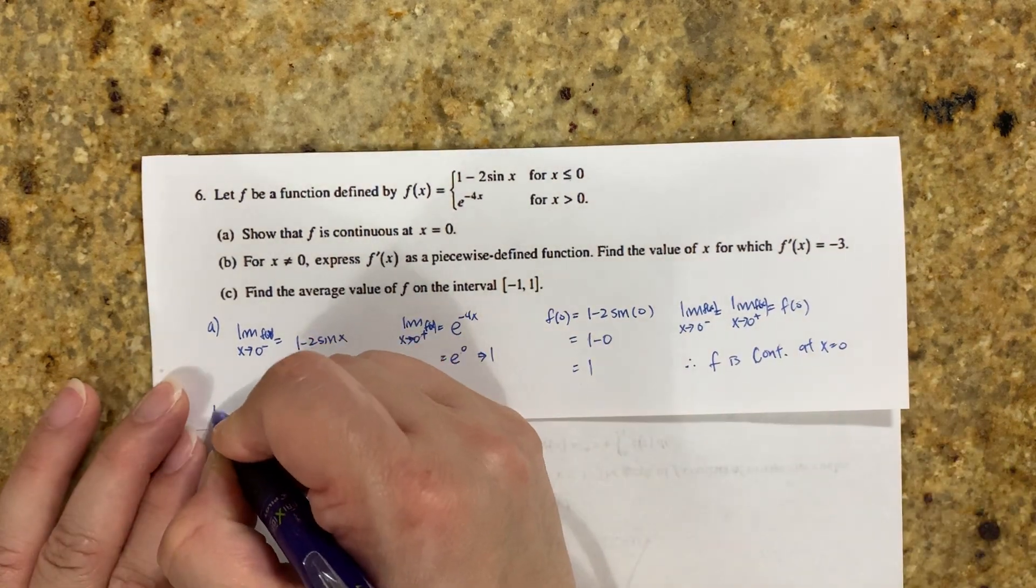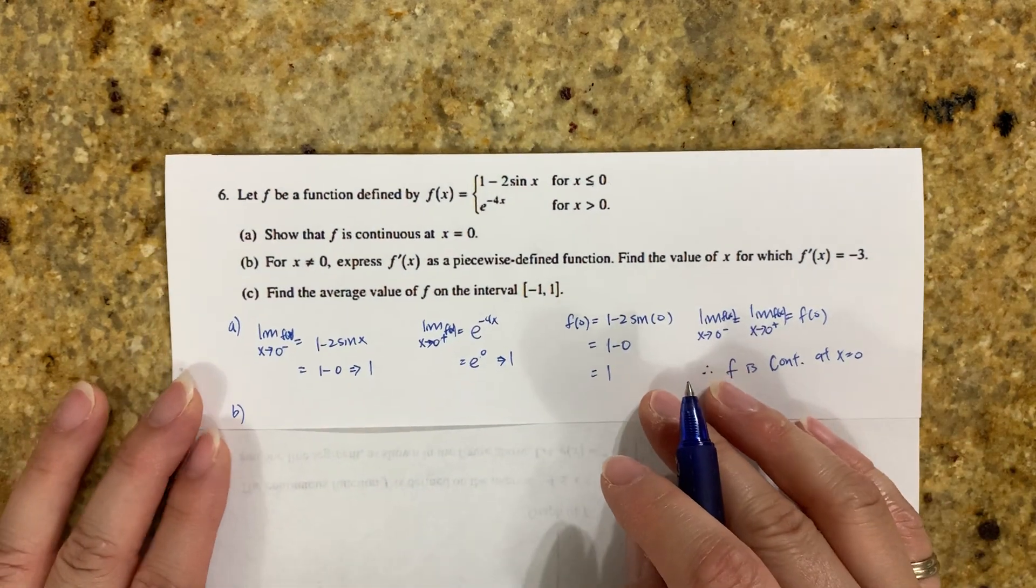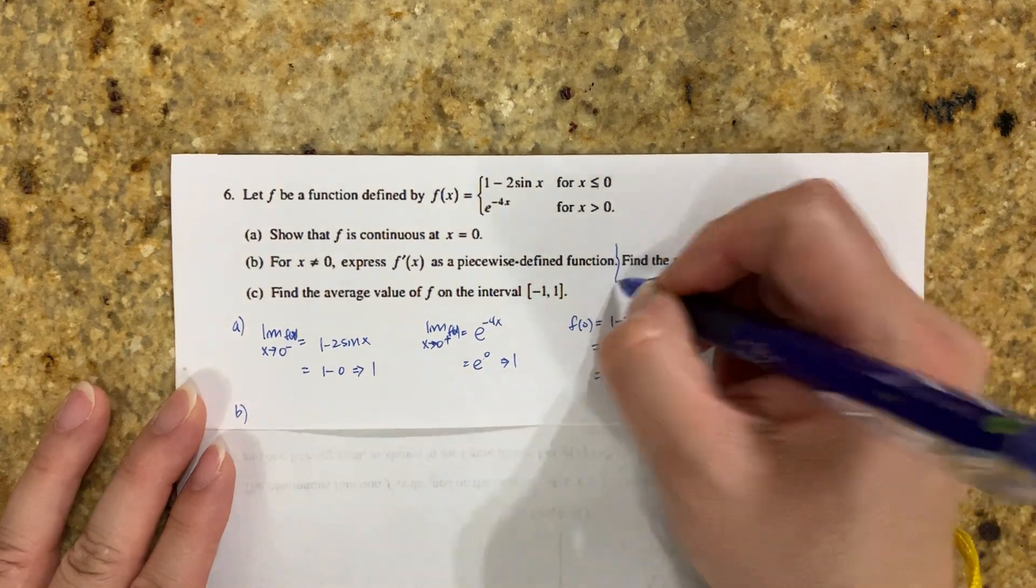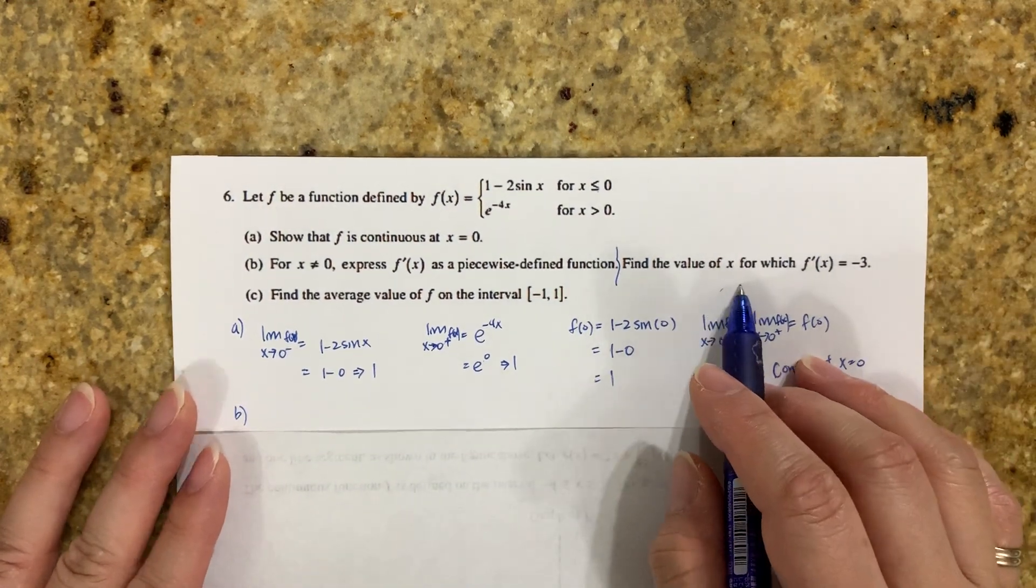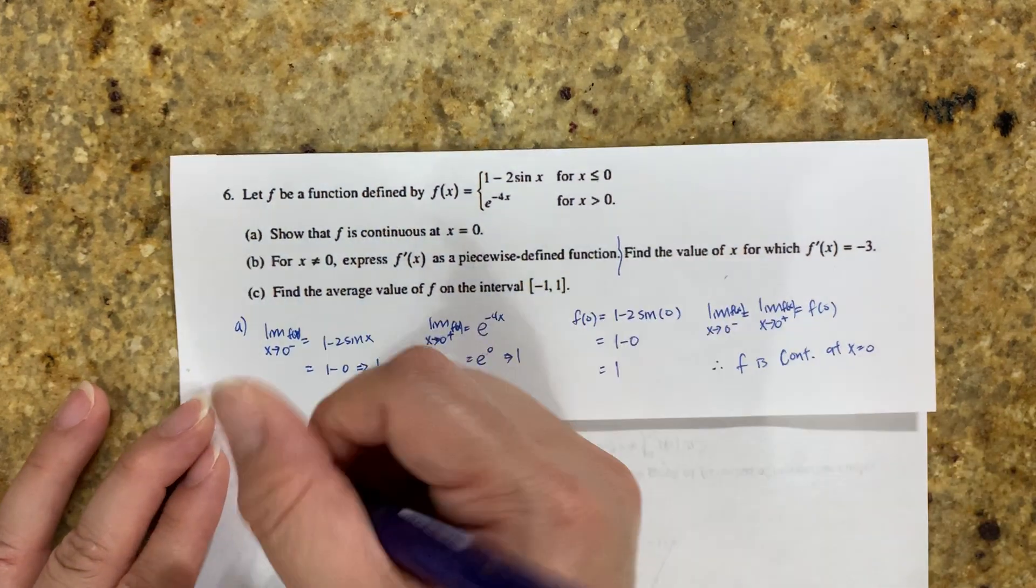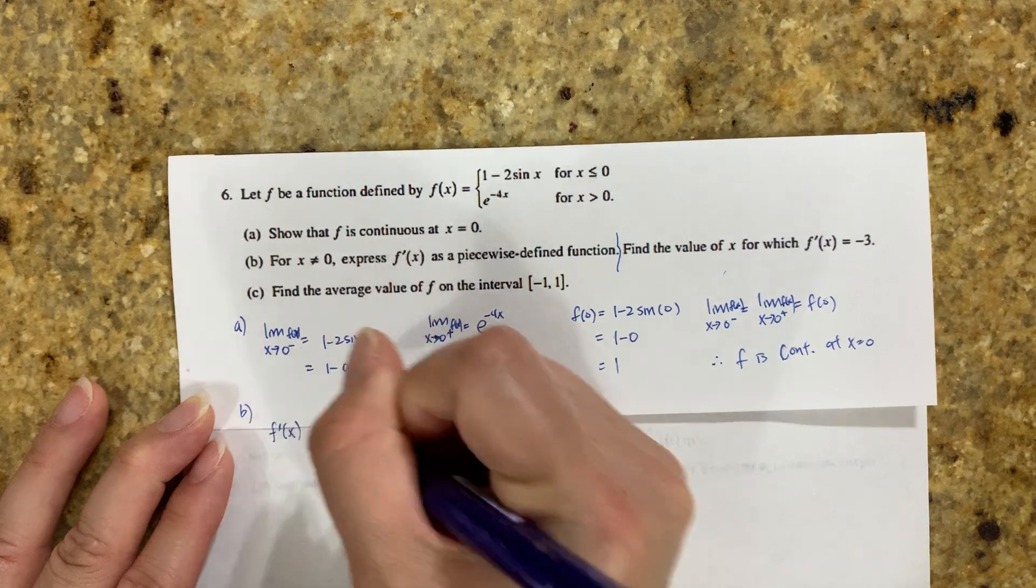For part B, for x ≠ 0, express f' as a piecewise defined function and find a value of x for which f' = -3.